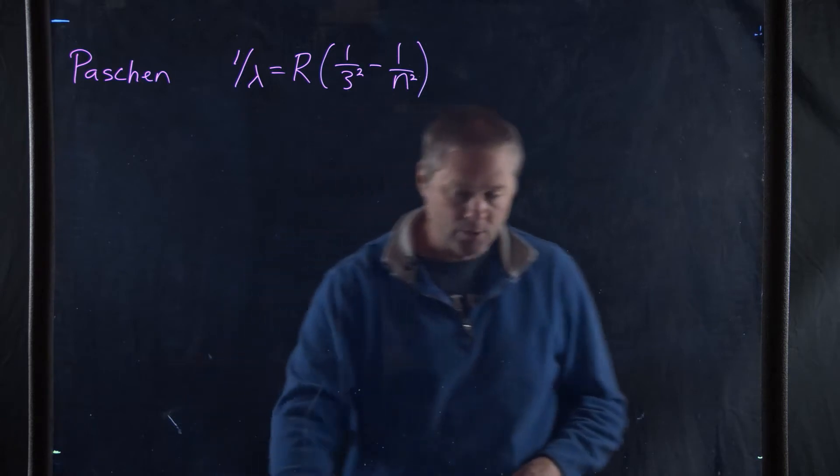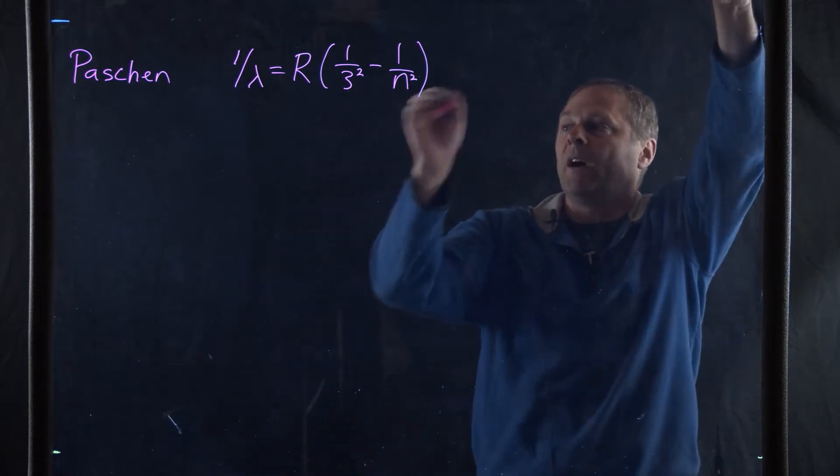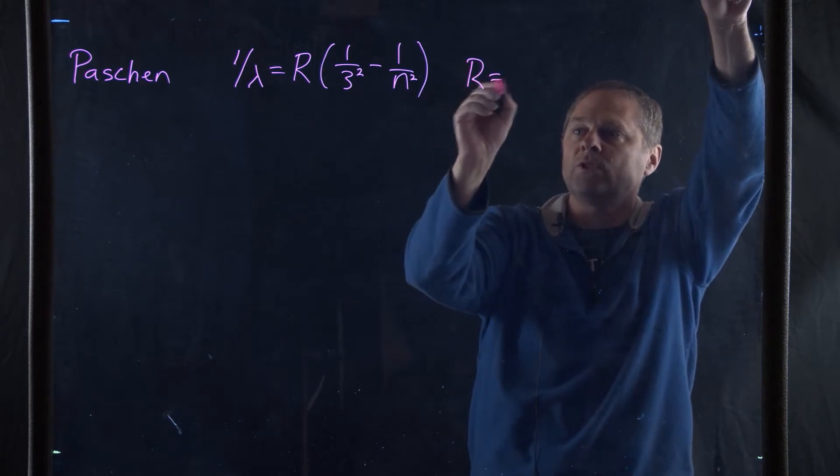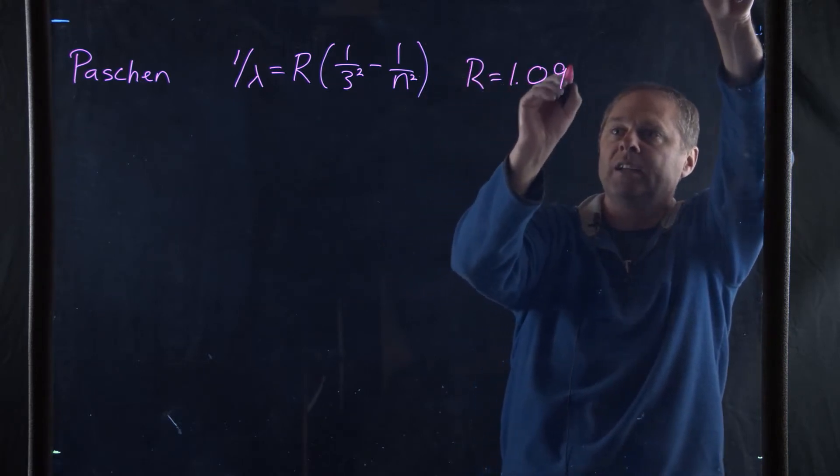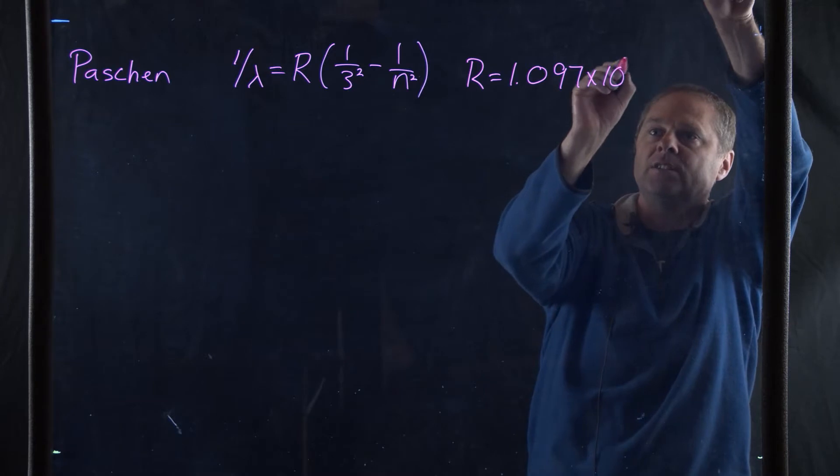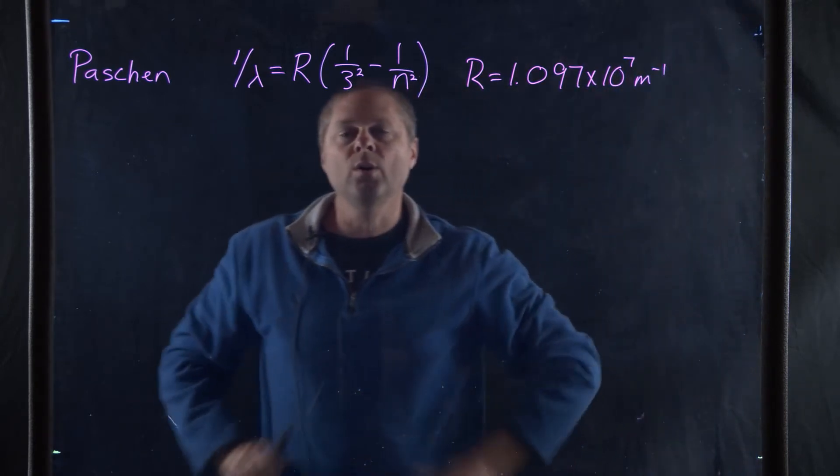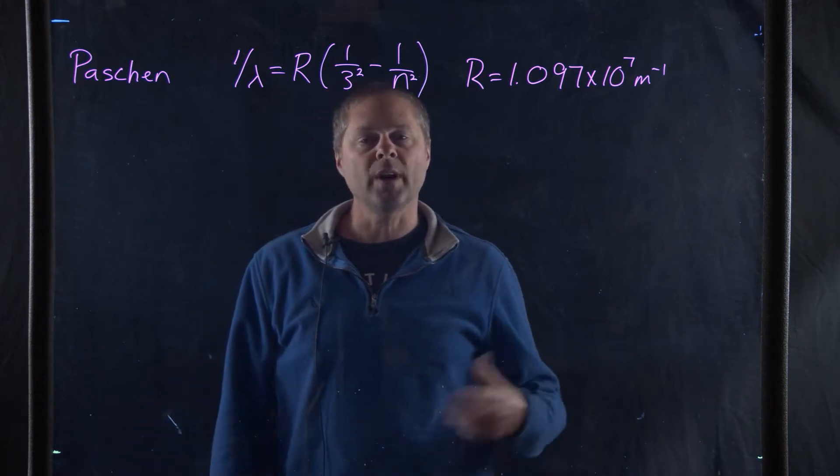We're going to use the exact same equation we used before. 1 over lambda equals R, which is Rydberg's constant, 1.097 times 10 to the 7th inverse meters, times the quantity 1 over 3 squared minus 1 over n squared.